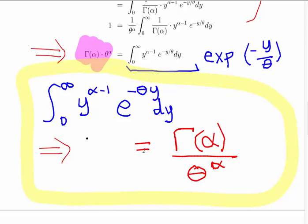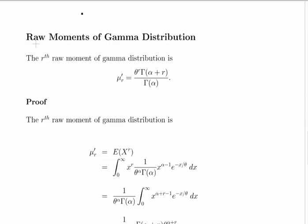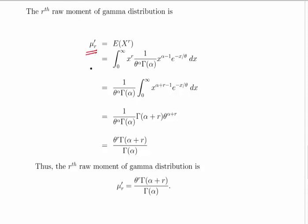Now we're going to look at how to derive an expression for the raw moments of the Gamma distribution. The rth raw moment is mu prime of r, equal to theta to the power of r times the Gamma function of alpha plus r, divided by the Gamma function of alpha. The notation mu prime of r is the expected value of x to the power of r. We put that into our integral: x to the power of r times the PDF of the Gamma distribution. Taking the constant out, we're left with x to the power of alpha plus r minus 1 times e to the minus x divided by theta.